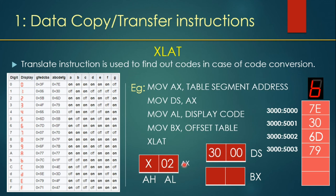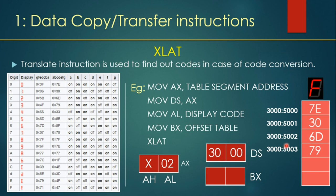Now, AX has the value 2, meaning we want to display 2 on the seven-segment display. To display 2, we need the value 6D. BX holds the offset of the lookup table, so we add AL (which is 2) to BX. BX plus AL gives us 5000 plus 2, which is address 5002. That location is pointed to by the XLAT instruction, and the data fetched from the lookup table is 6D, which goes into the accumulator. So the value in AL changes from 2 to 6D. Now, if we send 6D to the output port, it will show 2 on the seven-segment display.